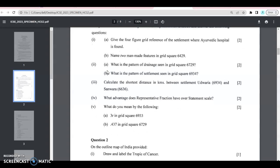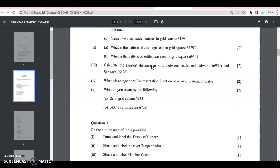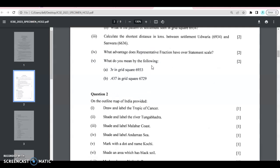Then what is the pattern seen, what is the settlement seen. The distance question is asked every year. Then what do you mean by 3R in grid square 3693, 3672, 9? You'll have to look at the topo sheet and see which kind of settlement or which kind of pattern is given.